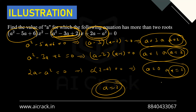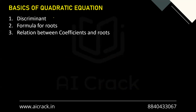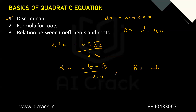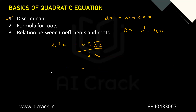Now let's talk about basics of quadratic equations. The first concept is discriminant. For ax² + bx + c = 0, the discriminant D is defined as b² - 4ac. The formula for roots is: α, β = (−b ± √D) / 2a. So one root α = (−b + √D) / 2a and the other root β = (−b − √D) / 2a.